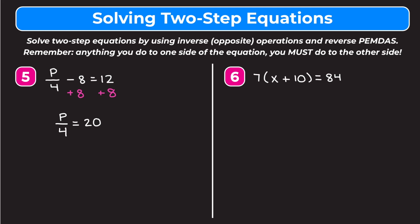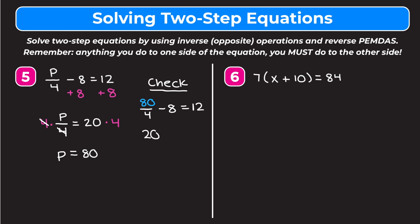To get rid of this 4 that's being divided, we do the inverse, which is multiplication. We multiply both sides by 4. The 4s cancel out, leaving p. On the right, 20 times 4 gives us 80. So p equals 80. Checking our work: 80 over 4 minus 8 equals 12. 80 divided by 4 is 20, so 20 minus 8 equals 12. 20 minus 8 is 12, so 12 equals 12 — a true statement. p equals 80 is correct.